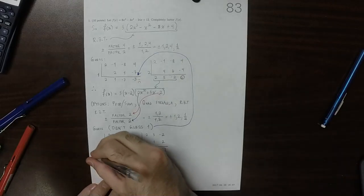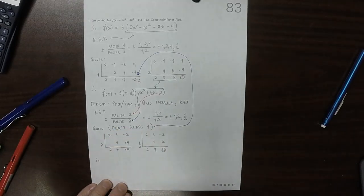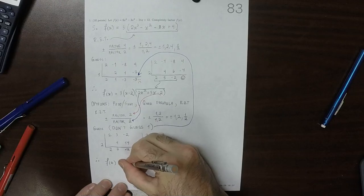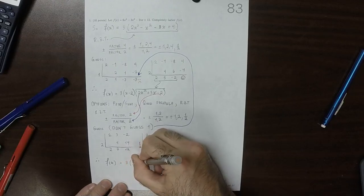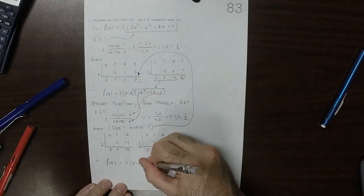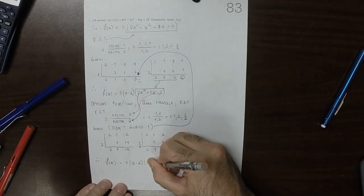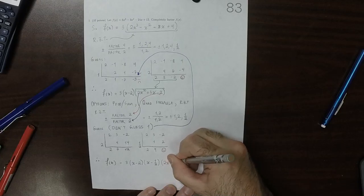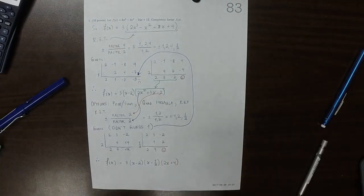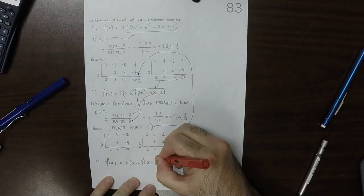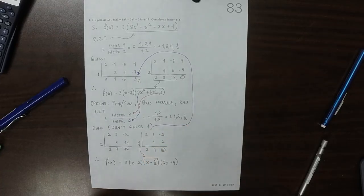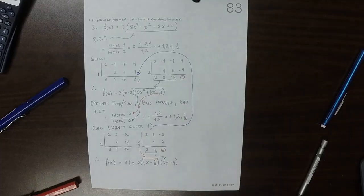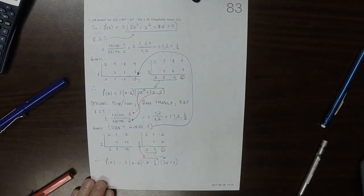So as a result of that, we know that f of x is the previous factors that we already figured out, 3, x minus 2. Then we've got the factor we just determined, x minus half, and the quotient, 2x plus 4. So this is from here, and this now. And that's the factorization.